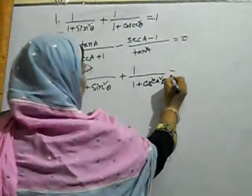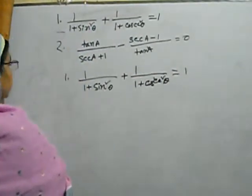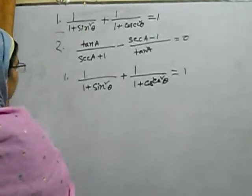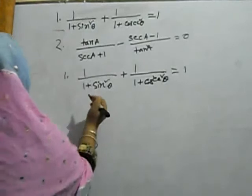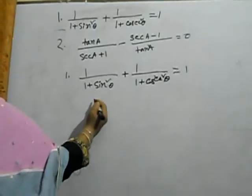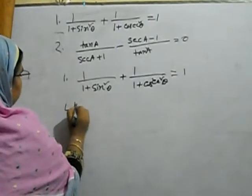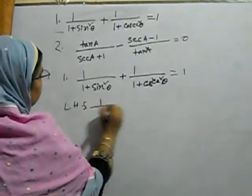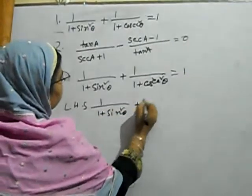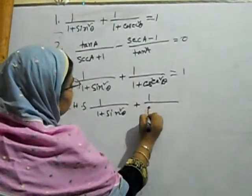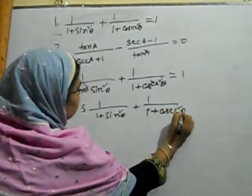It is a common balance. On the left hand side: 1 plus sin squared theta plus 1 by sin squared theta.